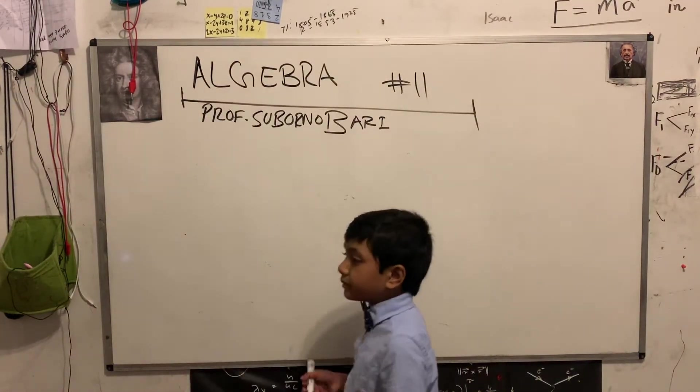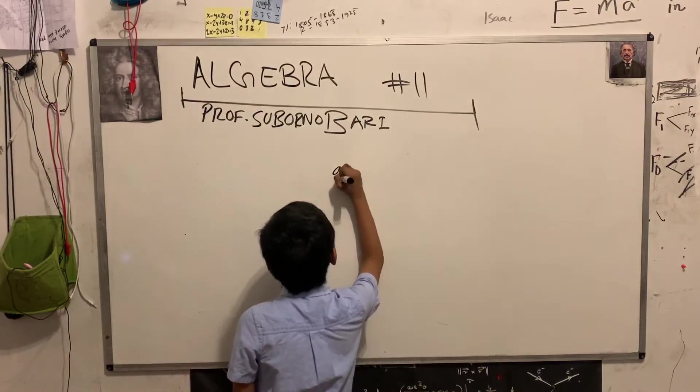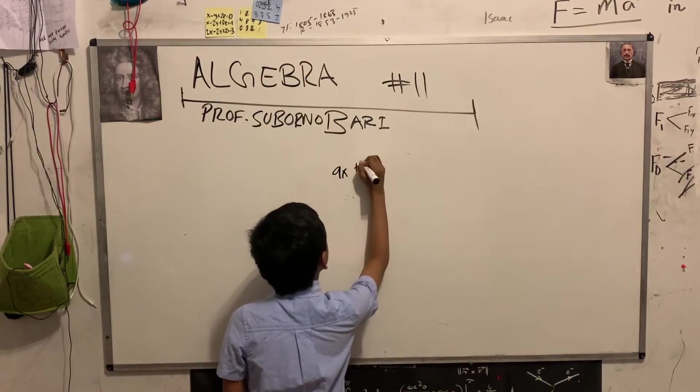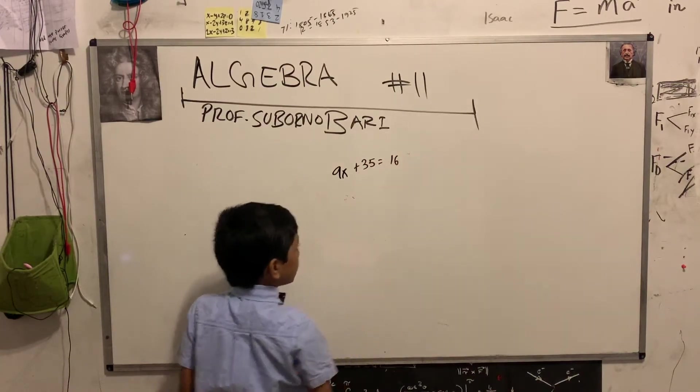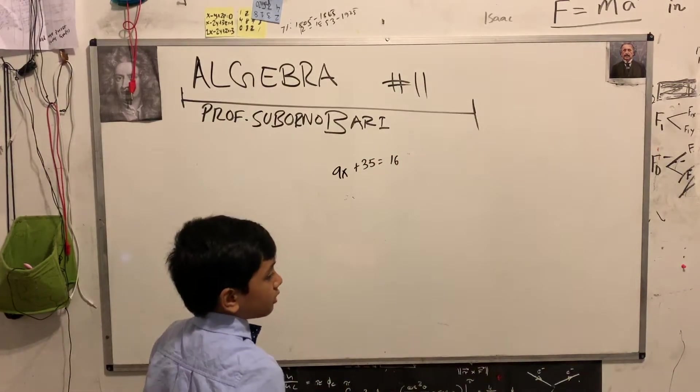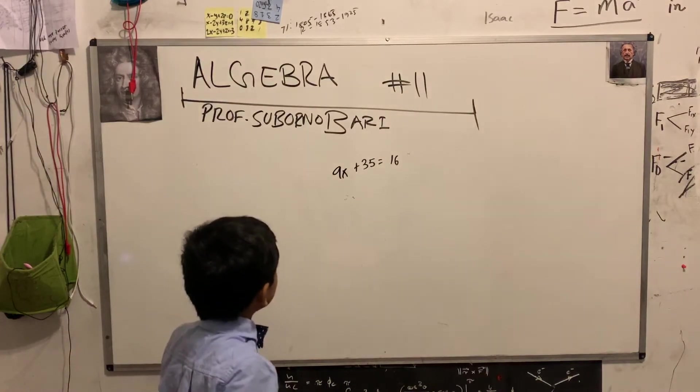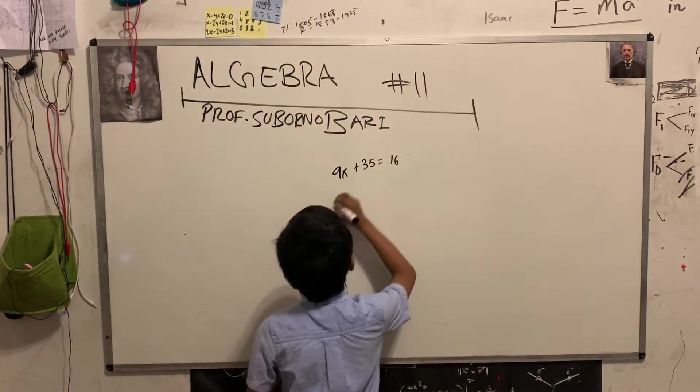So, let's say 9x plus 35 equals to 16. Now, we can solve for x here.